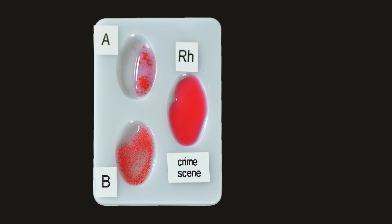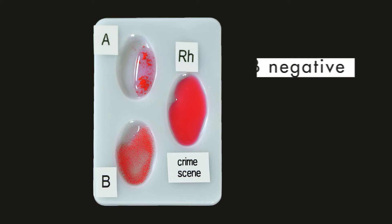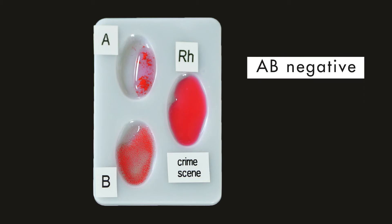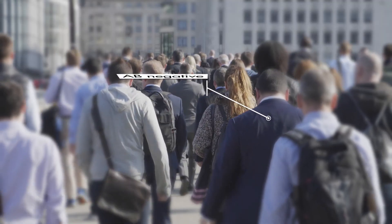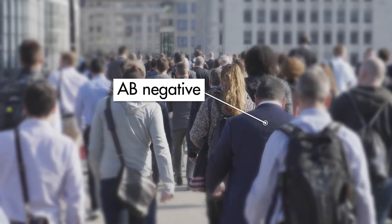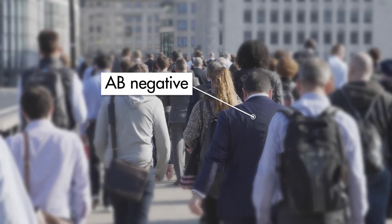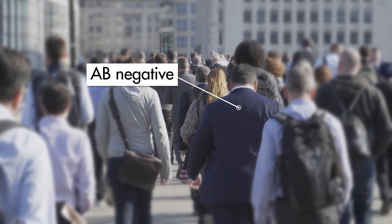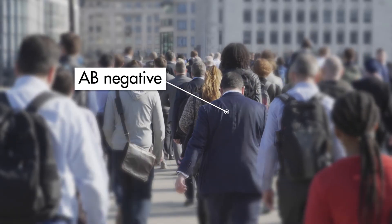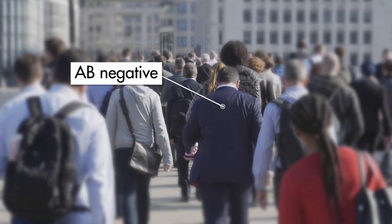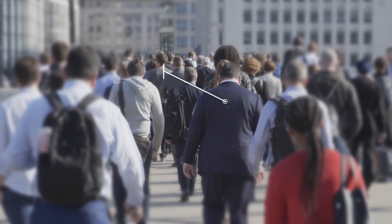Our forensic scientist has already determined that the blood collected at the crime scene is type AB negative. Less than 1% of the world's population has type AB negative blood. If any of the suspects has this blood type, we may have solved the mystery.